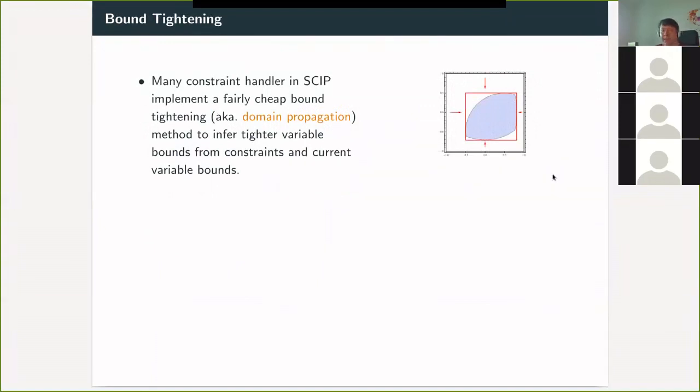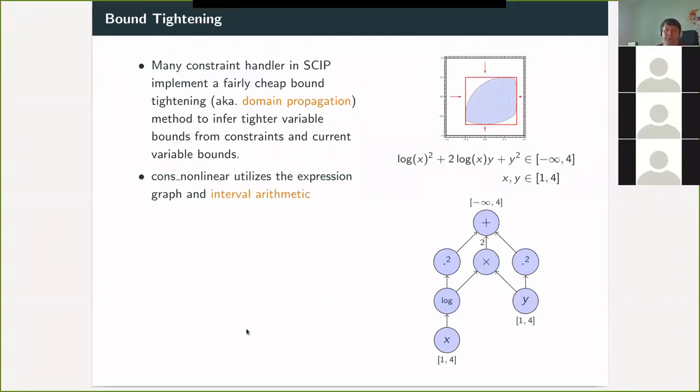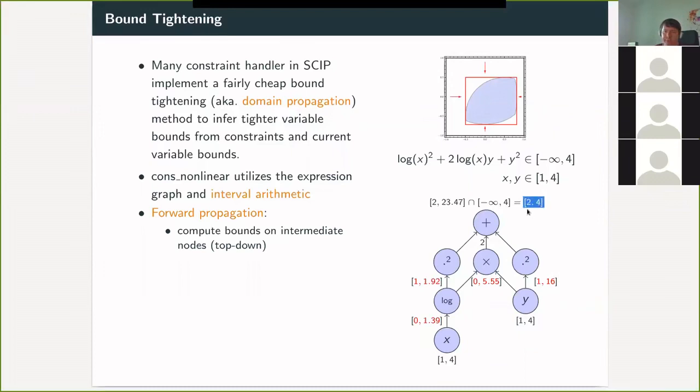And then one other important technique is bound tightening that I want to mention. So as we have just seen, bounds are pretty important if you deal with non-convex terms. So we can also try to compute tighter bounds on variables given the constraint and the current bounds. So for example, if we have X, Y being in one to four, and one to four, then we can use interval arithmetic to compute some bounds on each of the terms in between here. So we get a two to something like larger than four, I think. But then we intersect this one here, the interval for the sum, this interval that is given by the constraint.